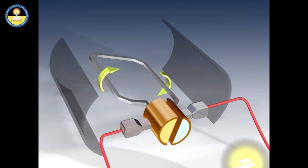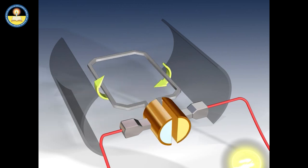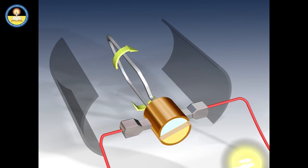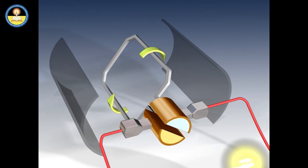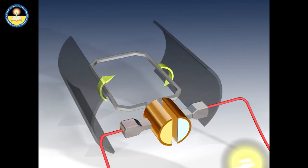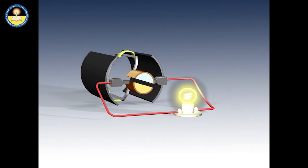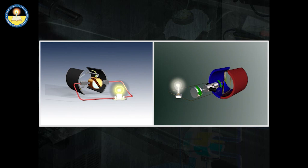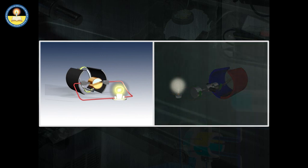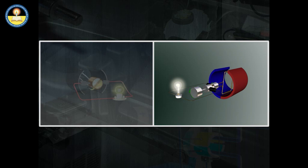When the coil completes its half rotation, its sides get interchanged and thereby the contact with the carbon brushes also gets interchanged. But the direction of current in the outer circuit remains the same. Thereby the two brushes always behave in the same manner and we get direct current from the generator. On a large scale, electricity is generated in the form of alternating current. The main difference between AC and DC generators is their slip rings — in a DC generator, two split rings are used, whereas in an AC generator, two full slip rings are used.